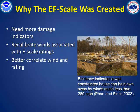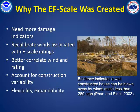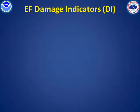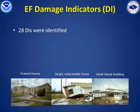Construction variability, a highly subjective part of the original F scale, needed to be evaluated more objectively. There was also a need for flexibility in the scale to allow for the rating of hurricane and downburst wind damage. To address these needs, the Enhanced Fujita, or EF scale, was developed. The EF scale committee identified 28 damage indicators, or DIs, based on their experience with tornado damage. The framed house is one damage indicator, and a mobile home and small retail buildings constitute other DIs.